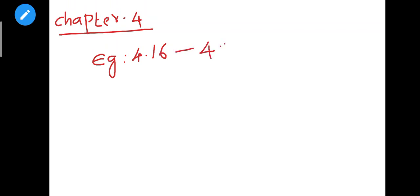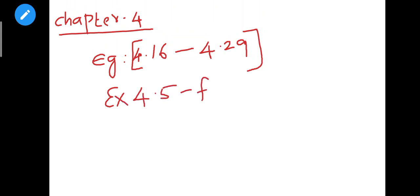So next chapter 4 — Inverse Trigonometric Functions. So chapter 4 — in the examples, delete example numbers 4.16 to 4.29: that is 4.16, 4.17, 4.18, 4.19, 4.20 up to 4.29 — all these sums you may delete. So next exercise 4.5 full reduce. Exercise 4.5 — all 10 sums, the 4.5 level, all sums omit. This is about the fourth chapter.